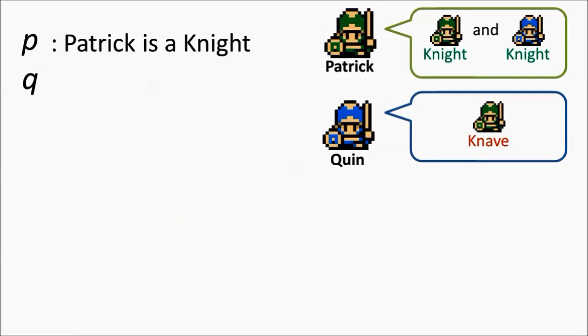First, we'll declare a Boolean variable for each Islander. When we say a variable is Boolean, we simply mean it can represent one of two values, either true or false. We'll let the variable P represent the statement Patrick is a Knight, and we'll let the variable Q represent Quinn is a Knight. At the moment, we don't know whether P or Q represent true or false statements, but we'll discover that shortly.